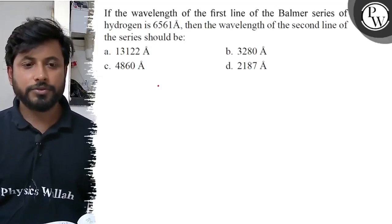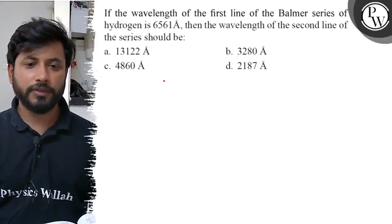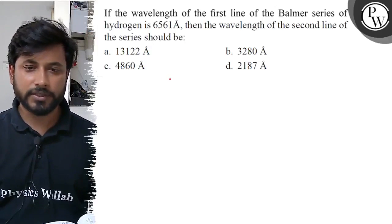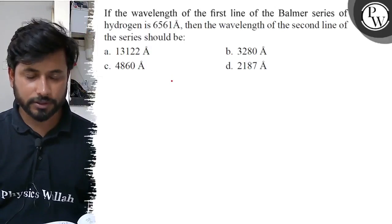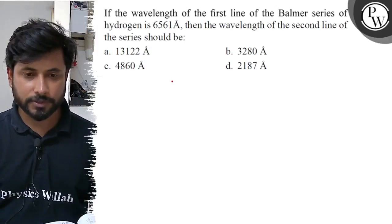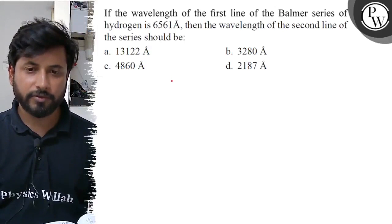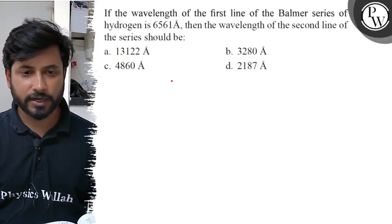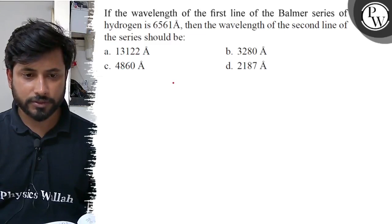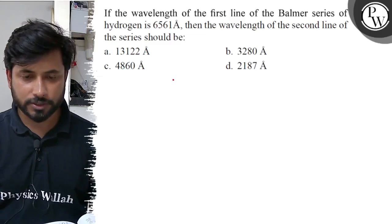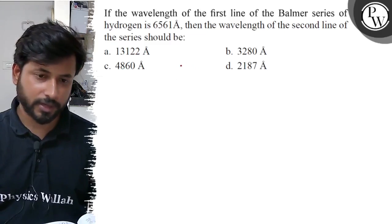Hello, let us see this question. If the wavelength of the first line of the Balmer series of hydrogen is 6561 angstrom, then the wavelength of the second line of the series should be. Option A is 13122 angstrom, Option B is 3280 angstrom, Option C is 4860 angstrom, Option D is 2187 angstrom.